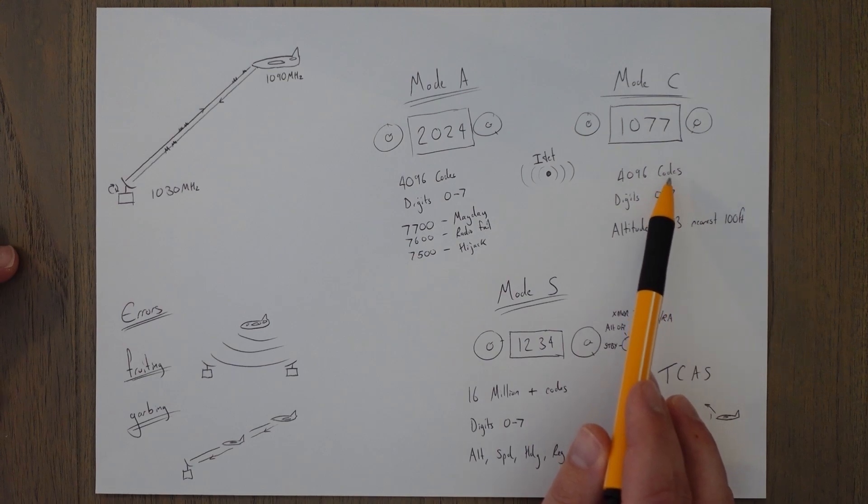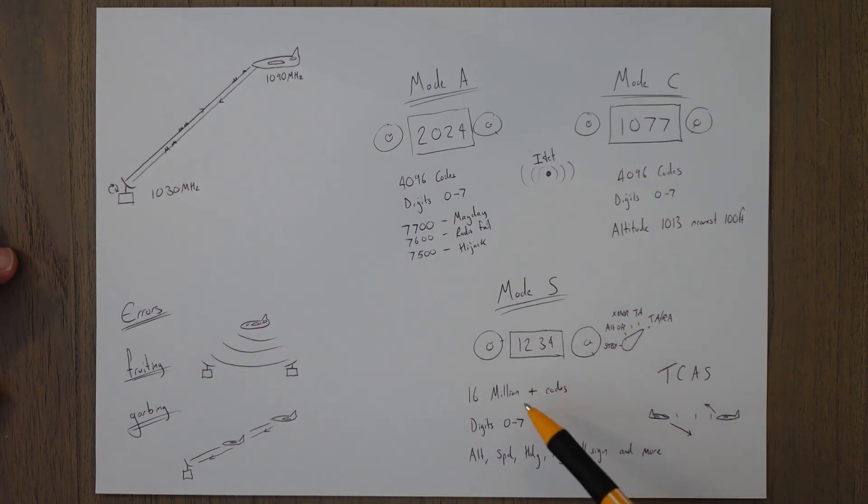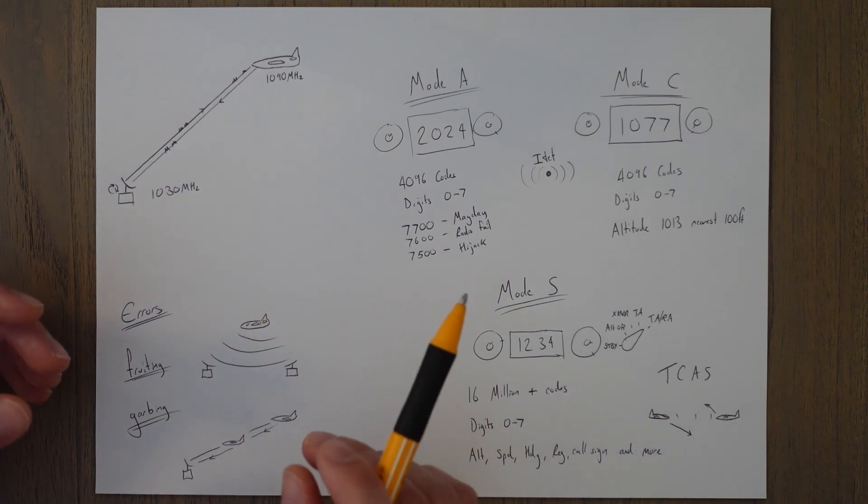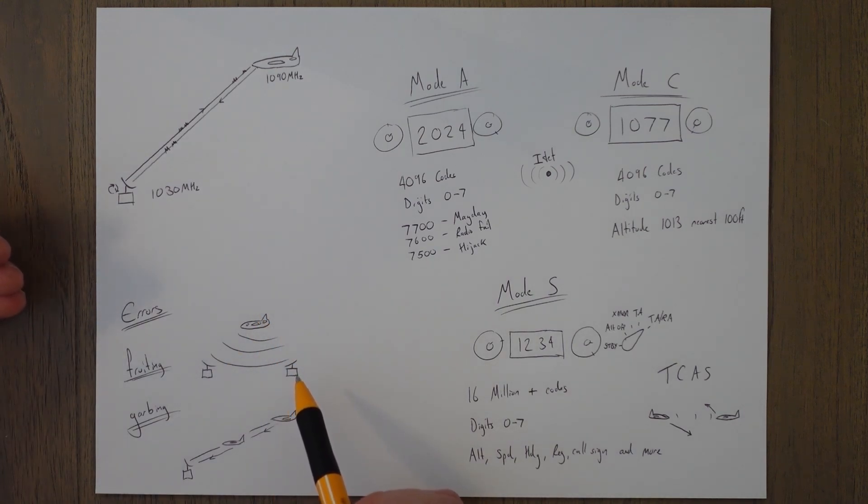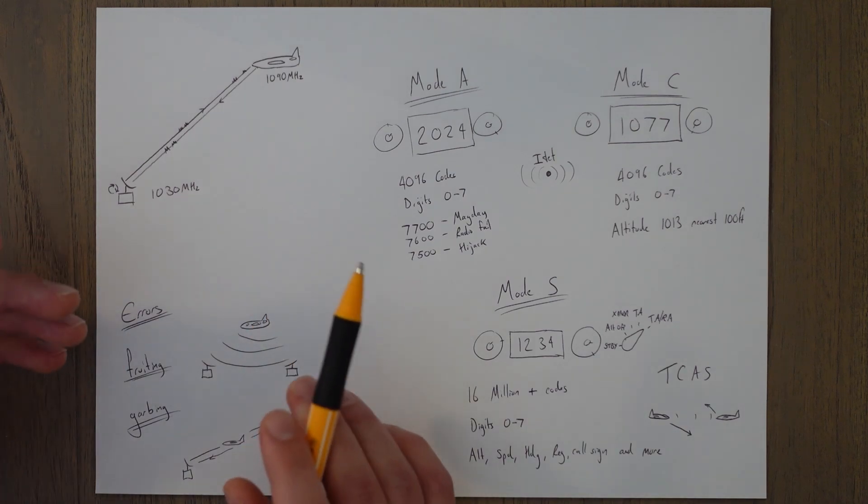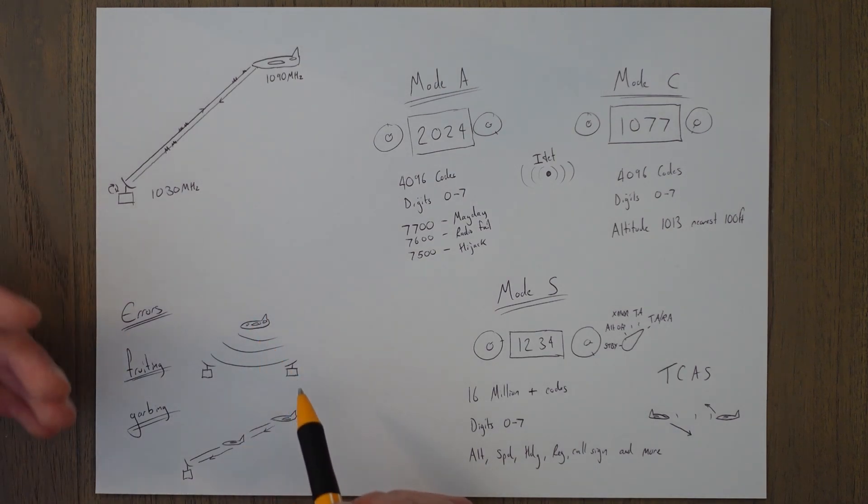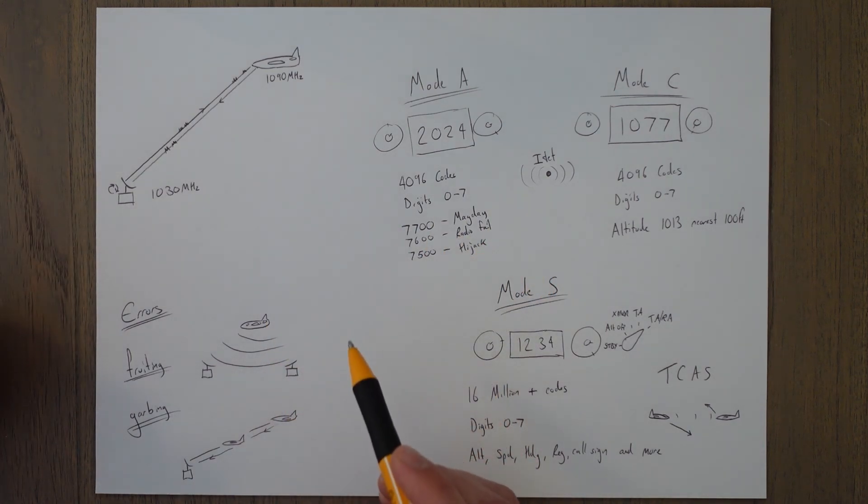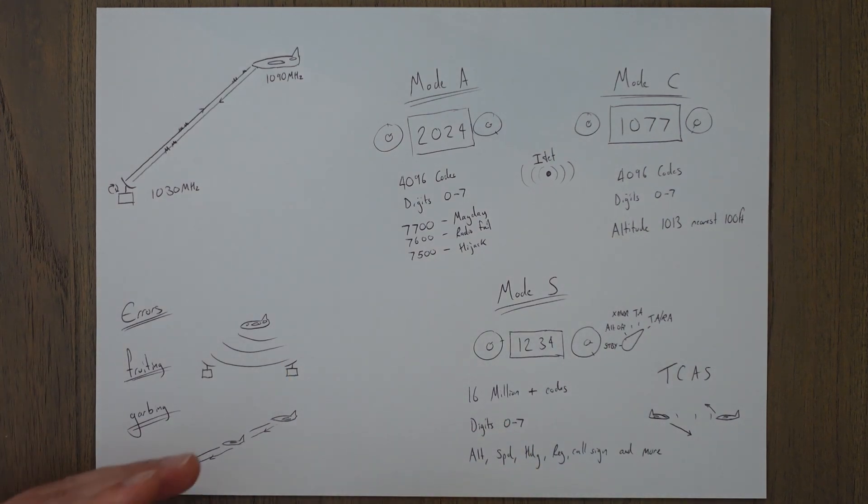There's a few errors in the Mode A and Mode C that are kind of solved by the Mode S and this very unique signal that is sent out. The first one's fruiting. There's two ground stations, they both hear the reply to one interrogator, so this gets a reply when it didn't ask for any, it didn't interrogate for example. So that can cause confusion in bearing distance, and you might get a reply from an aircraft that's not within the air traffic control's region of control. Garbling is when they line up and the first aircraft basically shadows or casts a shadow on the second one, and it might reply to information and they overlap, and again that just leads to confusing information.